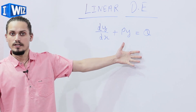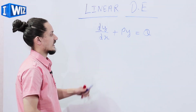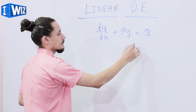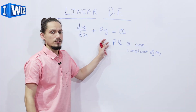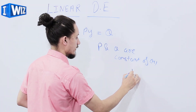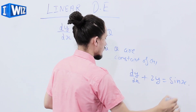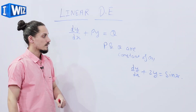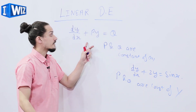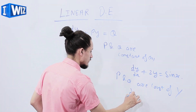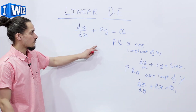The next topic of this video is linear differential equations. A differential equation of the form dy/dx + py = q, where p and q are functions of x, is called a linear differential equation of first order. For example, dy/dx + 2y = sin(x). Similarly, if p and q are functions of y, then the linear differential equation is given as dx/dy + p₁x = q₁.